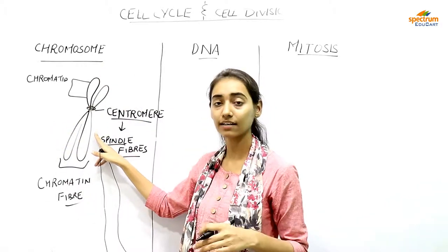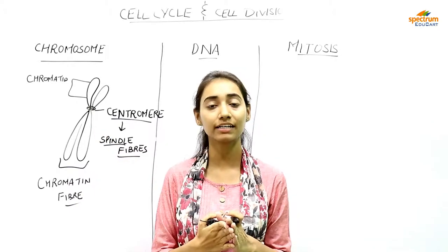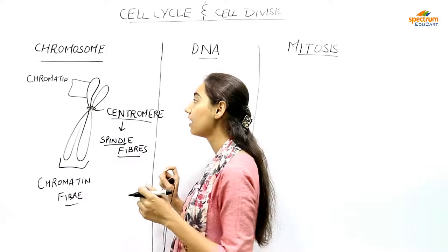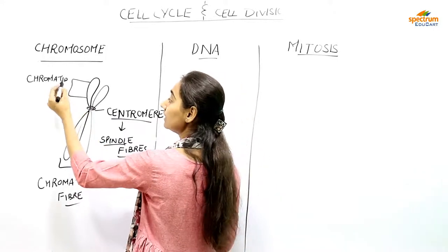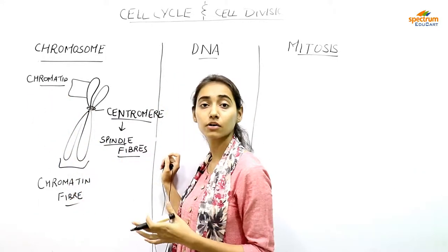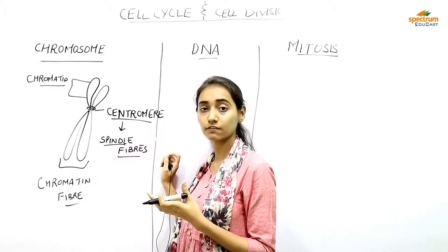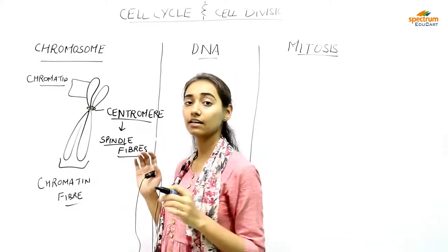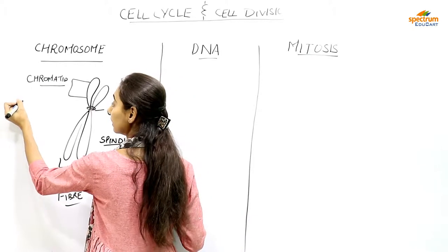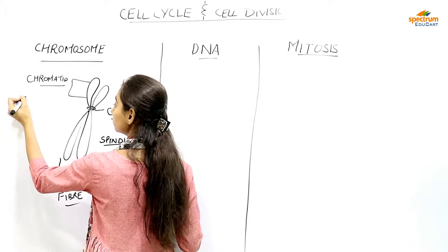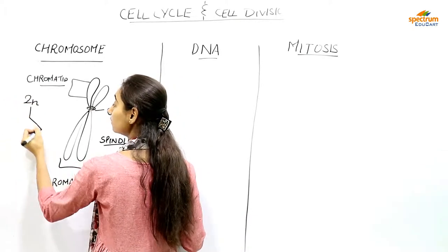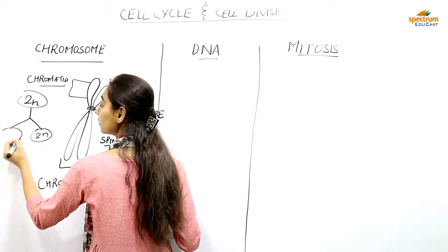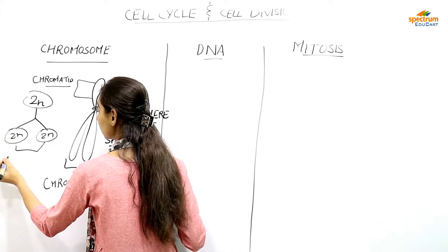These chromatids duplicate and replicate so that the parent cell divides into two daughter cells with equal numbers of chromosomes. Chromatids replicate in a process called interphase, in which duplication takes place. In mitosis they are divided into equal daughter cells — the parent cell consists of 2n chromosomes and the diploid number is maintained in the daughter cells as well.